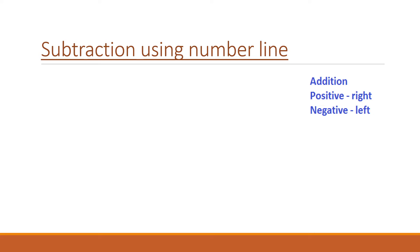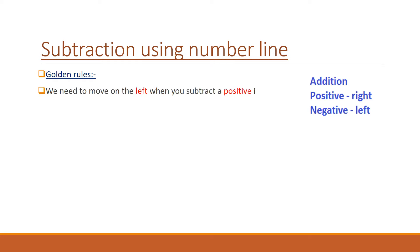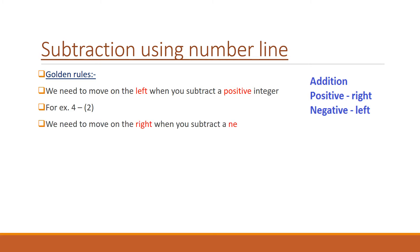We know very well that subtraction is the reverse operation of addition. So for subtraction, we need to move left when we subtract a positive integer. For example, 4 minus 2 — here 2 is positive — so we need to move left. And we need to move right when we subtract a negative integer.